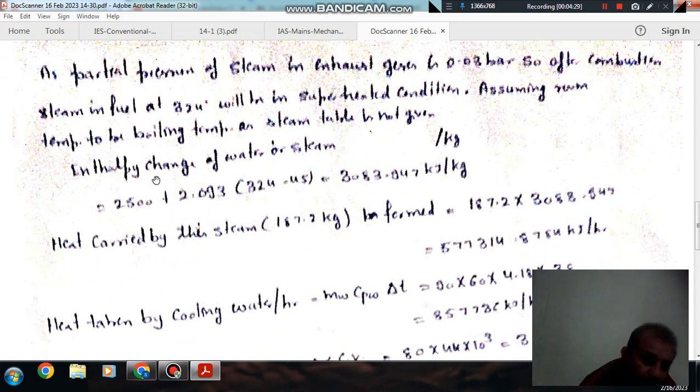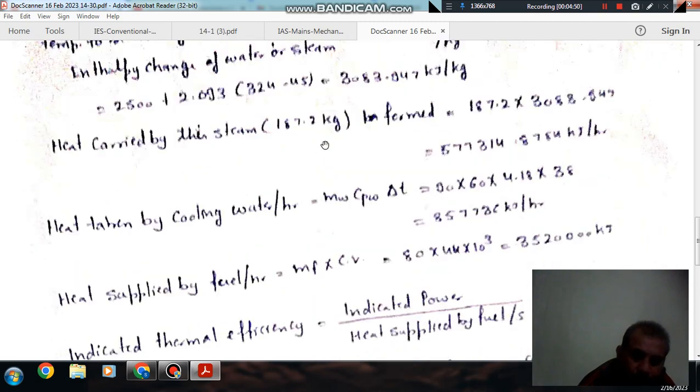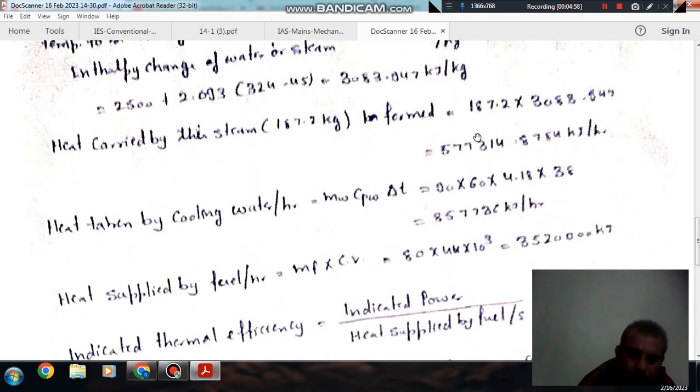So heat, the enthalpy change of water per kg is hfg at this plus Cp steam times temperature rise, which equals 2500 plus 2.093 times temperature difference, equals 3083.947 kJ per kg. Heat carried by steam is per kg times total steam, which is 187.2 kg per hour, so total heat carried by steam is 187.2 into this per hour.